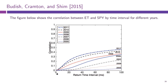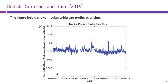The same point is illustrated by the following graph showing median profits per arbitrage over time. These do not decline — profits per arbitrage are more or less consistent and robust over time. Once again, they do not vanish as more high-frequency traders enter the market.